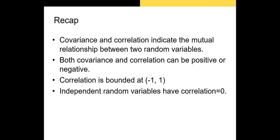To recap: covariance and correlation both indicate the mutual relationship between two random variables, and both can be positive or negative. Covariance is unbounded — it can range from negative infinity to positive infinity — but correlation is bounded between negative 1 and positive 1. Negative 1 indicates perfectly negative correlation, and positive 1 indicates perfectly positive correlation. Independent random variables have a correlation coefficient of zero. With that, I'll end this video and see you in the next one.